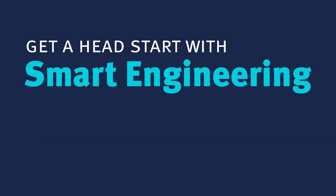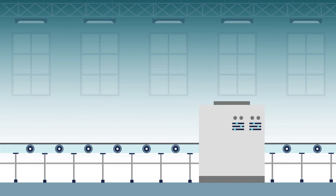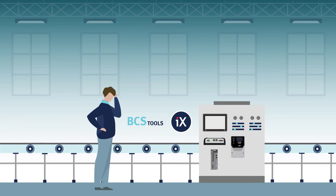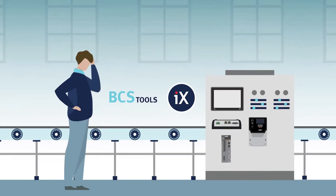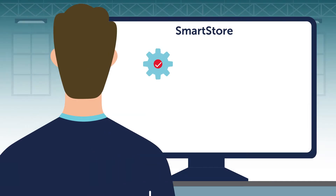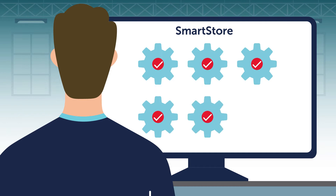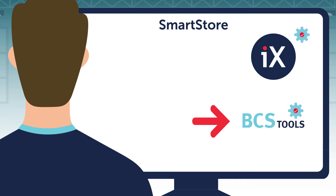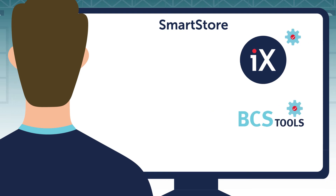Get a head start with smart engineering. When you are engineering an automation solution for your machine, you will of course need hardware and software. But you will probably appreciate some help with your project. In our smart store you can find helpful apps — we call them smart engineering resources.